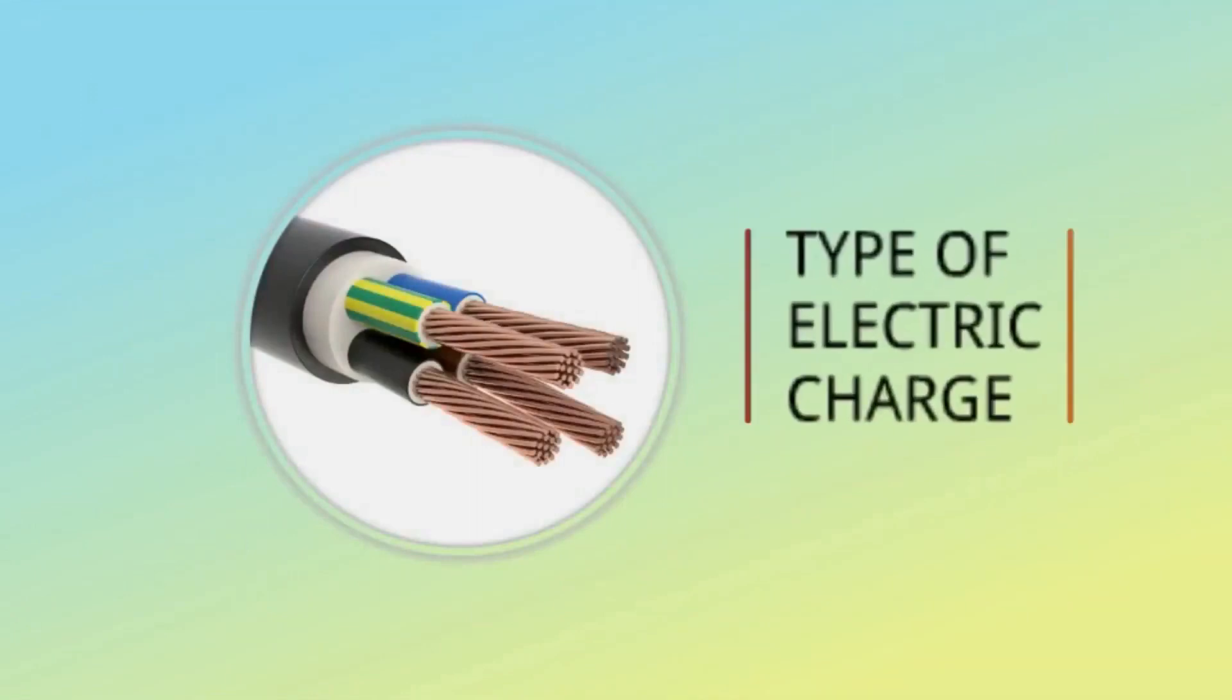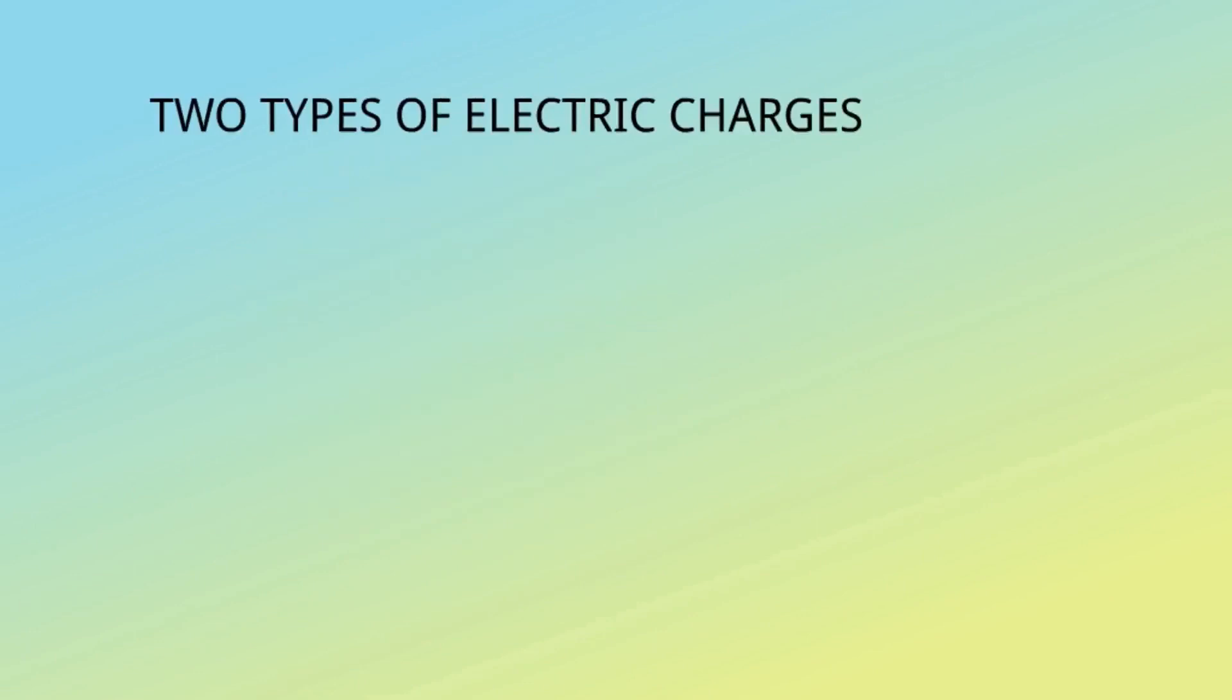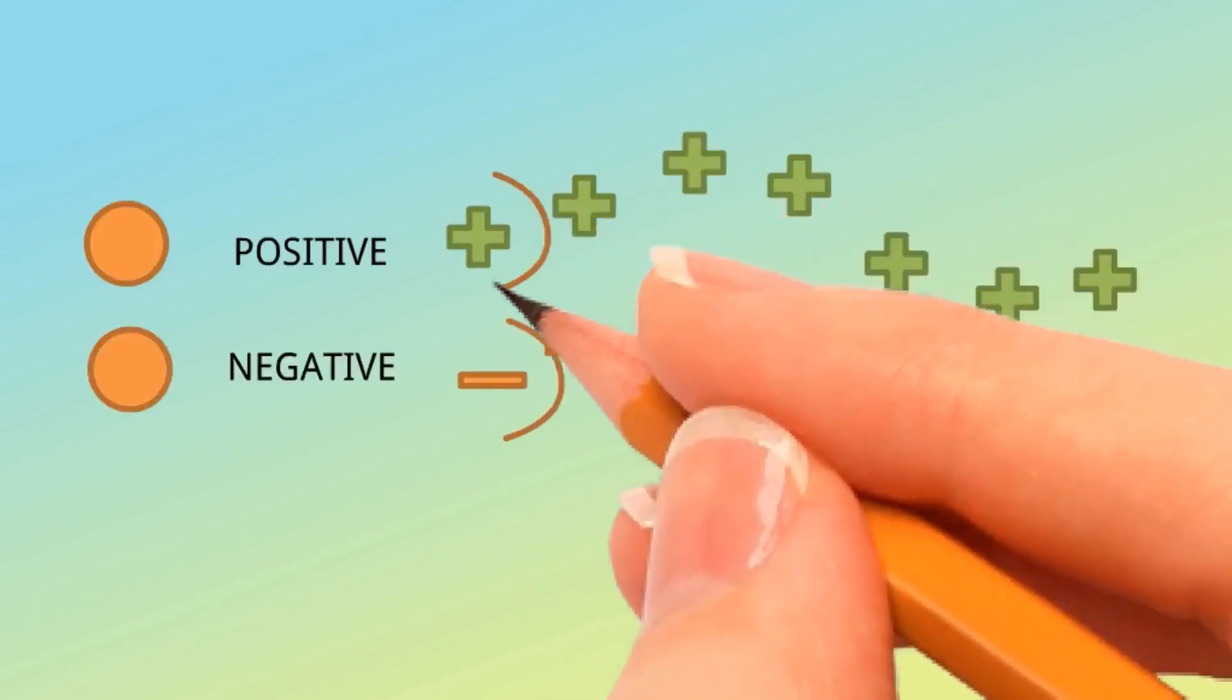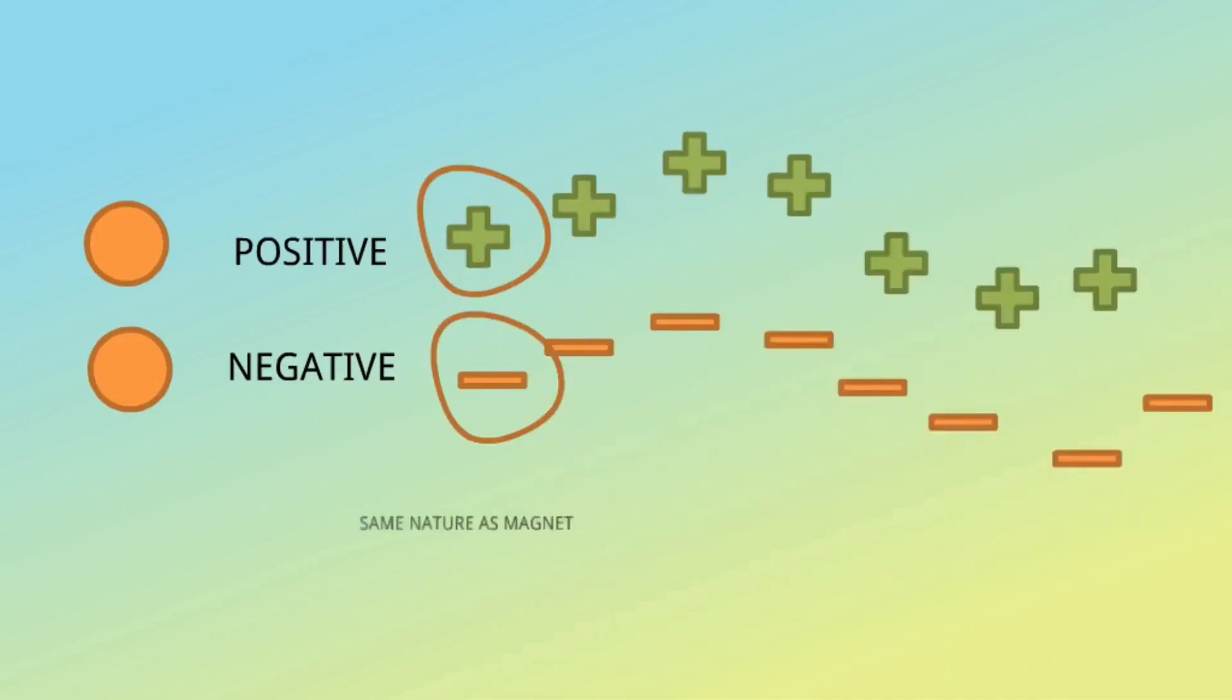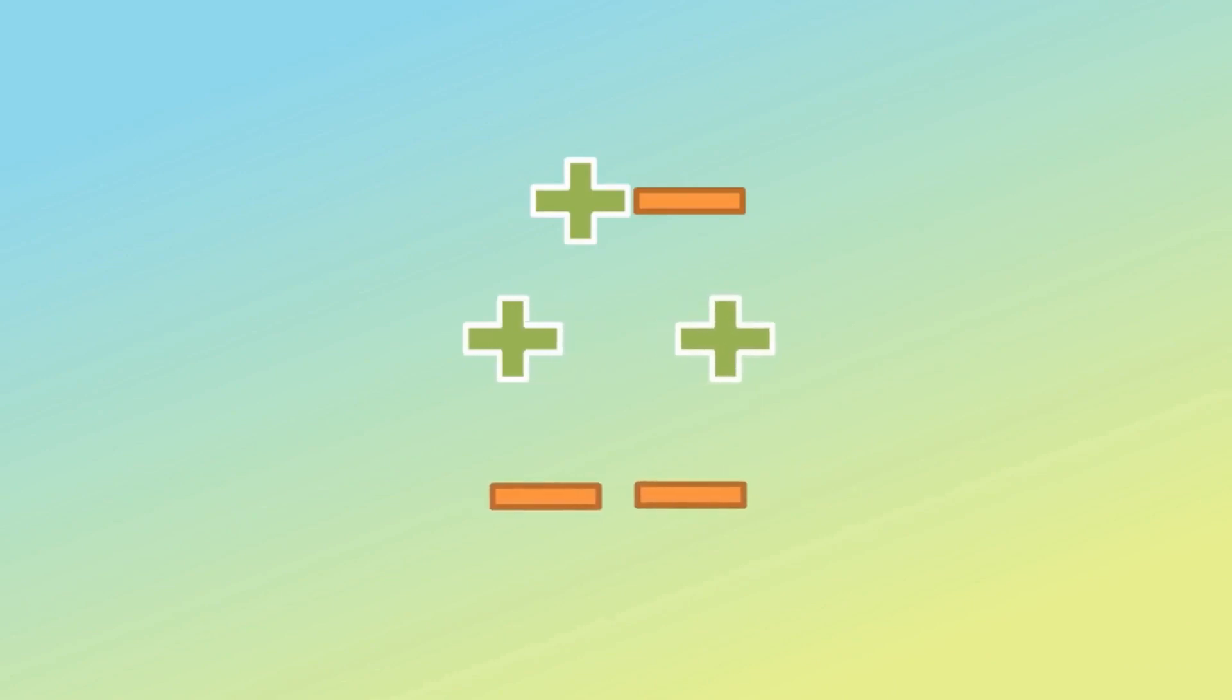There are two types of electric charge: positive electric charge and negative electric charge. These positive and negative electric charges have the same nature as magnets. If we take one positive and one negative charge, they will attract. If we take two positive charges, they will repel each other. If we take two negative charges, they will also repel.